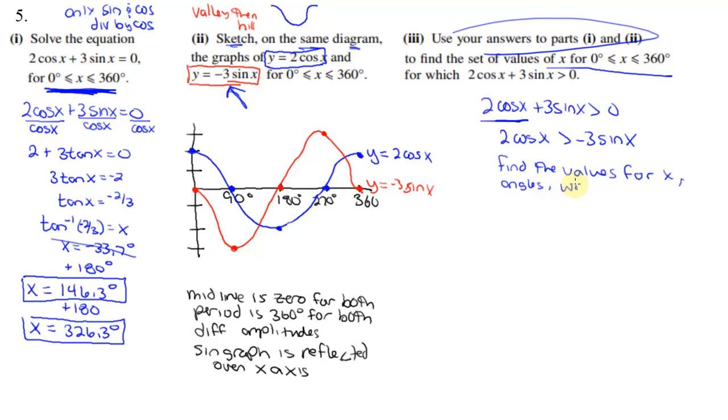...well basically what it's saying is find the x values of the angles where the cosine graph is greater, higher than the sine graph. And if I use part 1, well you'll notice 146 degrees, that looks like that's what that is right there where they intersect.